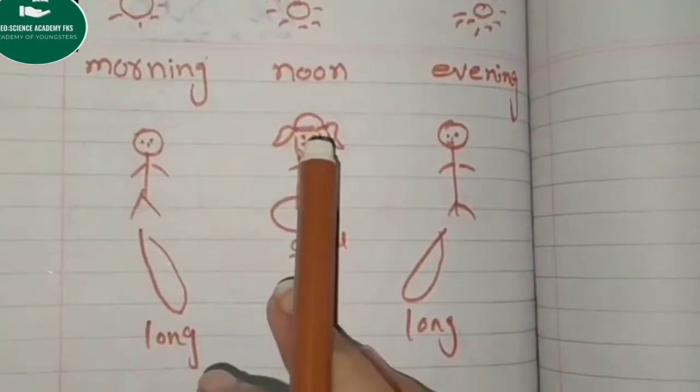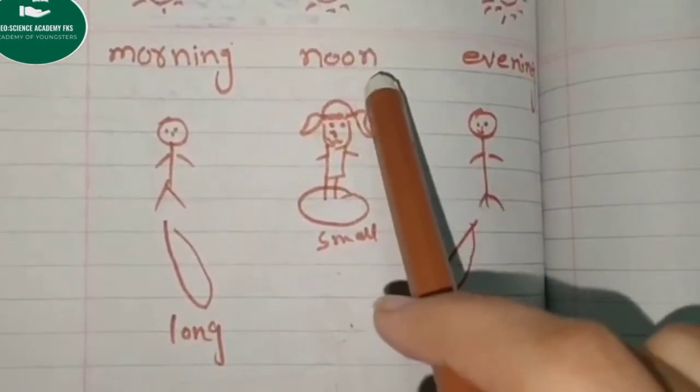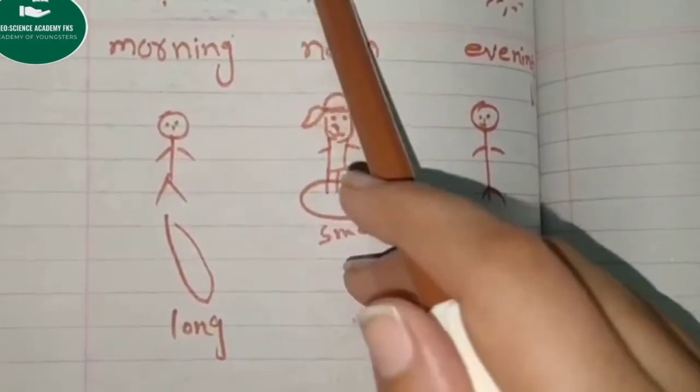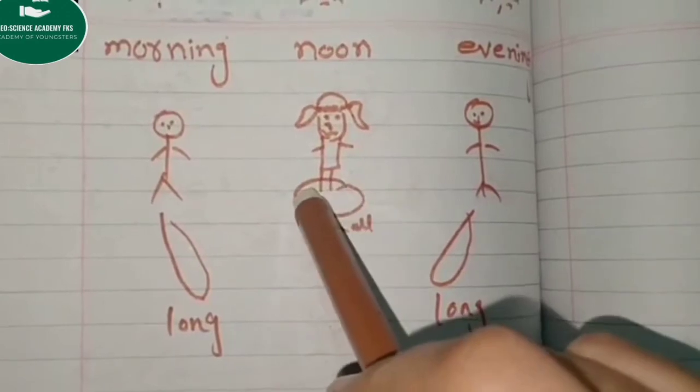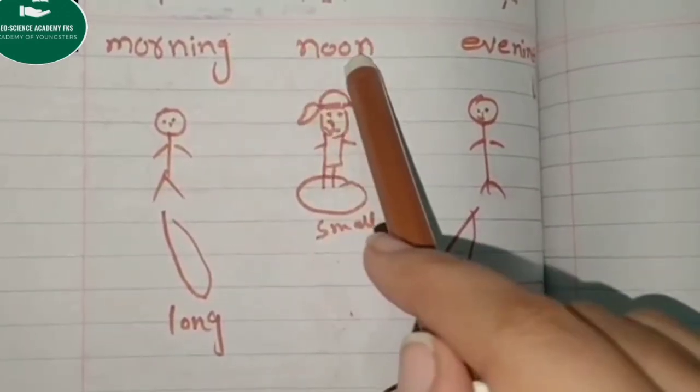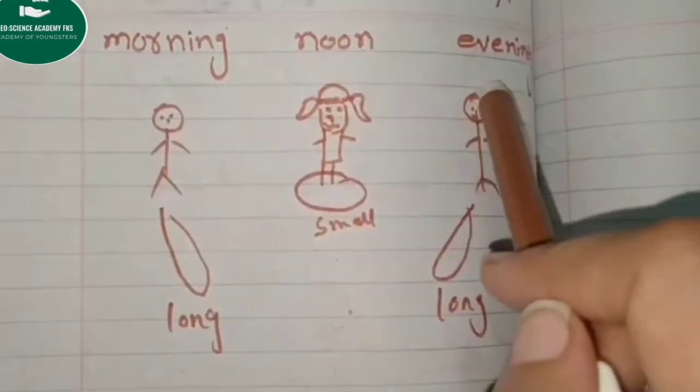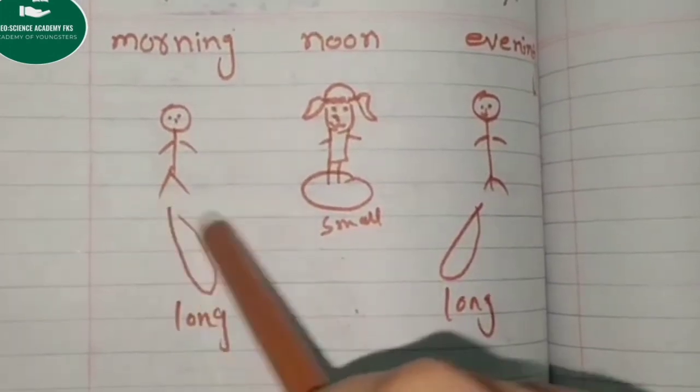If the sun is directly on your head, your shadow is very small and the timing is noon. If we talk about morning and evening, then our shadow is very long.